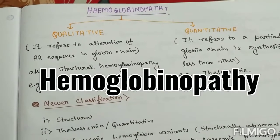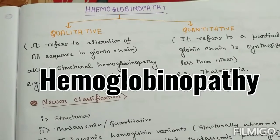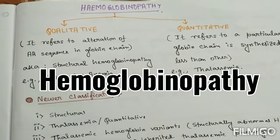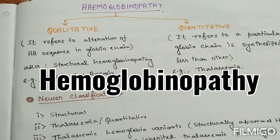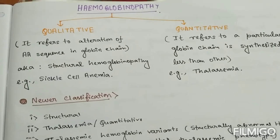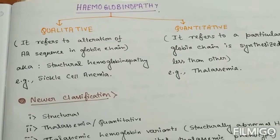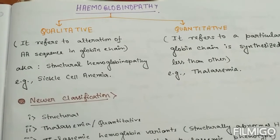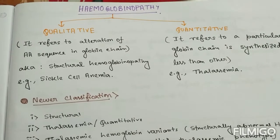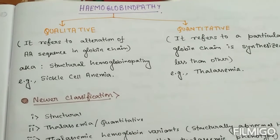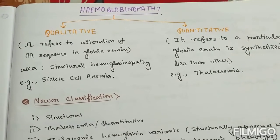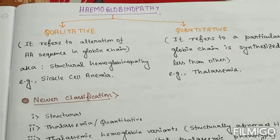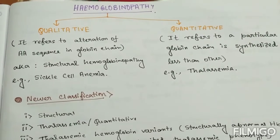Hello everyone, welcome to another video of this revision series. We are discussing hematological topics, and today we will discuss hemoglobinopathy. Hemoglobinopathy literally means disease related to hemoglobin, and it can be classically divided into qualitative and quantitative types.